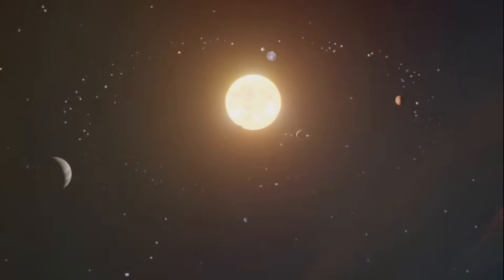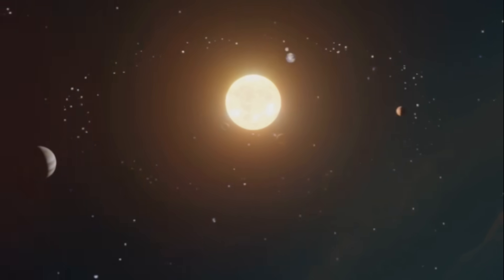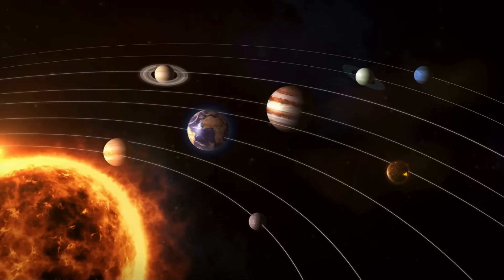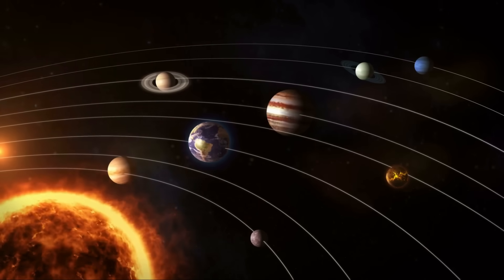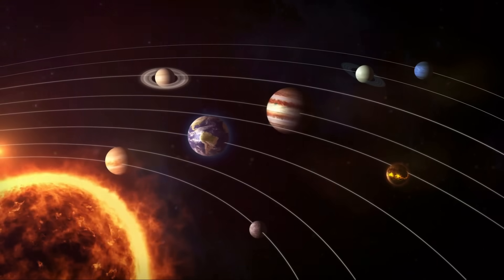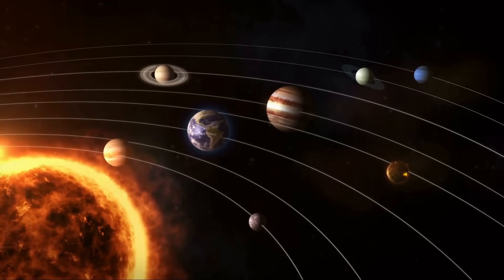Our solar system has a tail, just like a comet. Picture this: the sun, our home star, is blazing through the cosmos. And it's not going alone, it's taking all of us, the entire solar system, on a cosmic joyride through the Milky Way galaxy. And just like a comet streaking across the night sky, our solar system too leaves a trace behind.